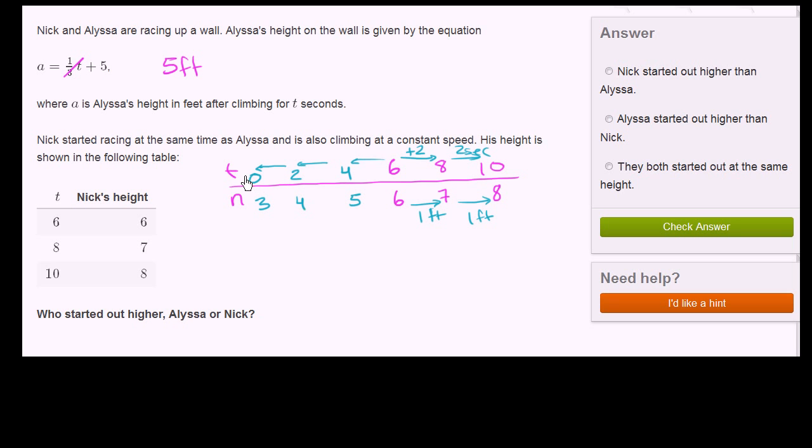So just like that, we now know at time equals 0, Nick's height is 3 feet in the air. So Alyssa started out higher than Nick. So this right over here would be the correct answer.